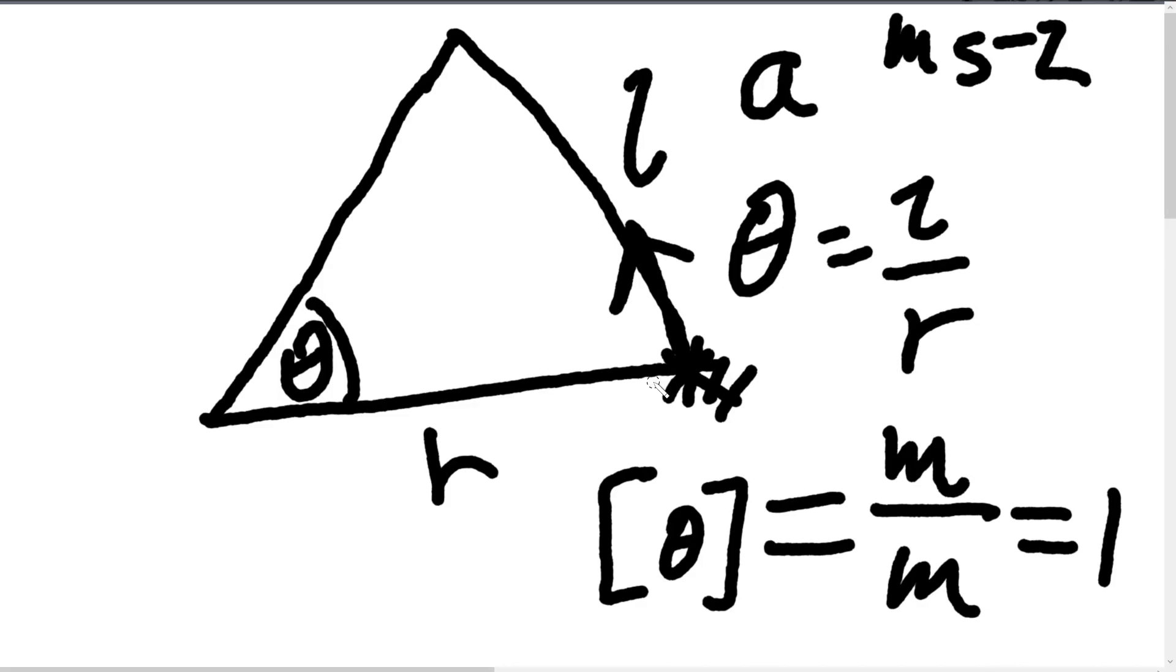So it's acceleration per meter away from the center, or meters per second squared per meter away from the center. And of course, like before, this meter per meter cancels out, leaving you with units per second squared.